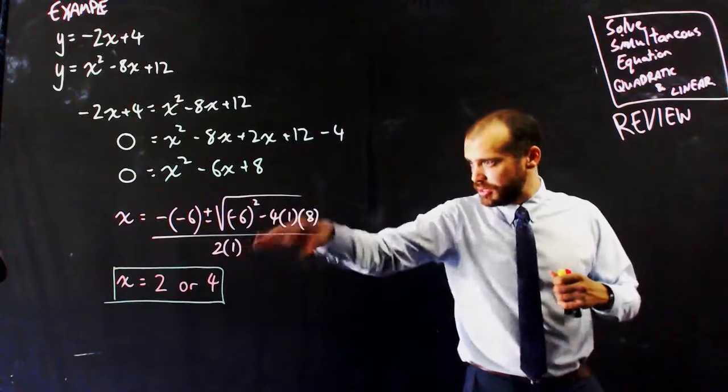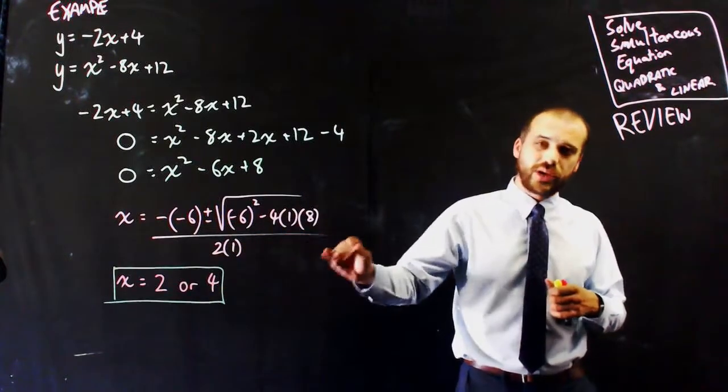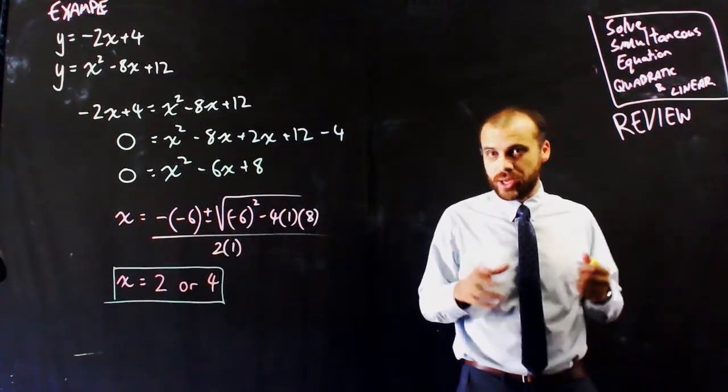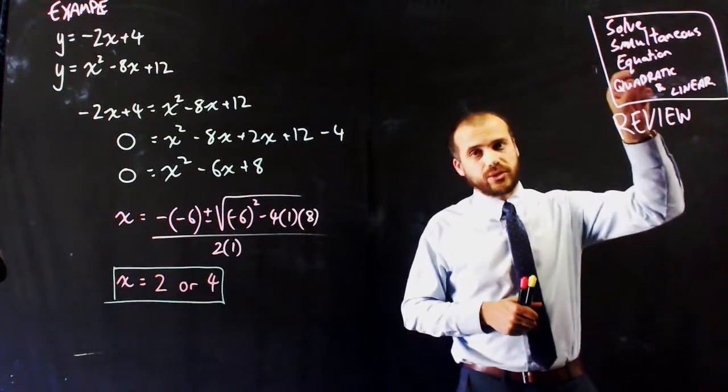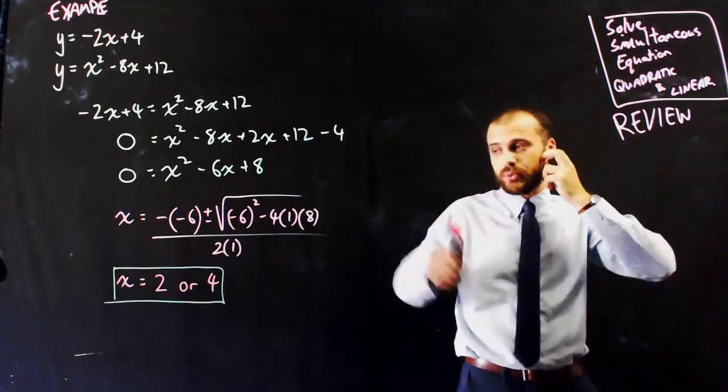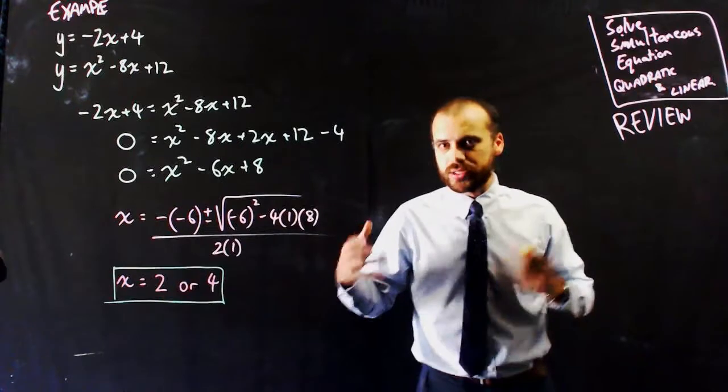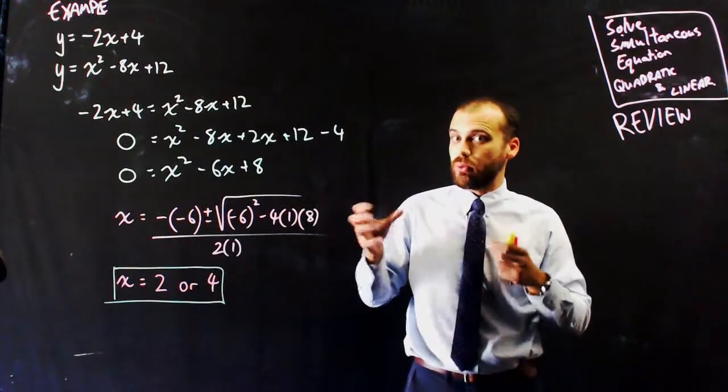Alright, so I've subbed them in, I've come up with x = 2 or x = 4. Some of you will be tempted to stop, but remember, when you're solving simultaneous equations, you're finding the points at which they meet. 2 is not a point, it's just a number. For that, we need our y-coordinates.